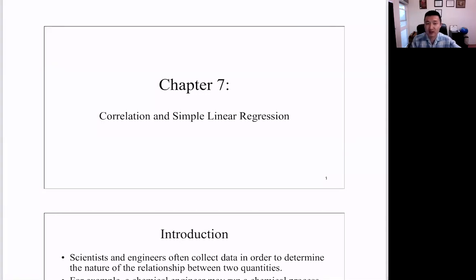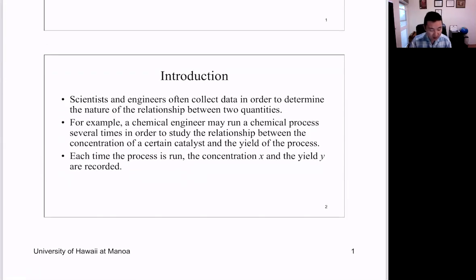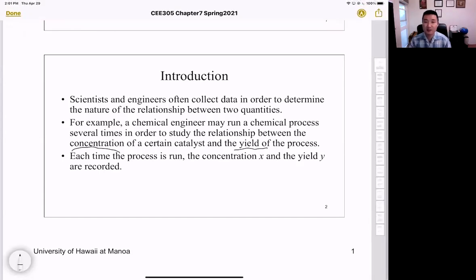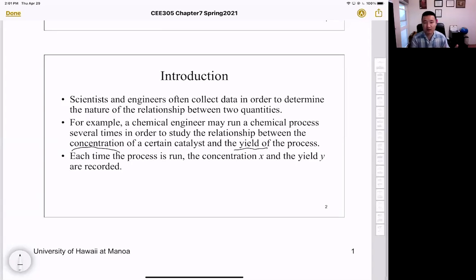Today we're going to finish the last chapter for this class — Chapter 7, called Correlation and Linear Regression. We often collect data to determine the nature of a relationship between two quantities. For example, a chemical engineer runs a process several times to study the correlation between the concentration of a catalyst and the yield. As a concrete researcher, I analyze how the strength of concrete is affected by density, water-to-cement ratio, and other parameters.